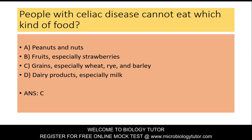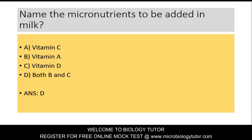People with celiac disease cannot eat which kind of food? A. Peanuts and nuts, B. Fruits especially strawberries, C. Grains especially wheat, rye and barley, D. Dairy products especially milk. Answer is C: Grains especially wheat, rye and barley.